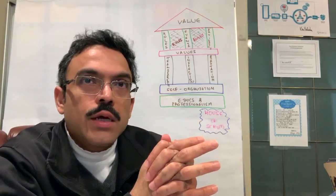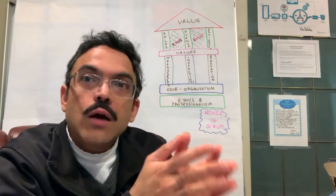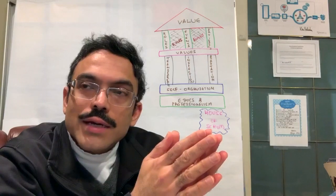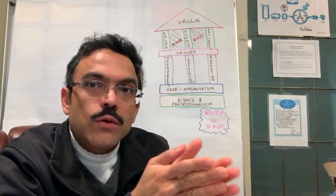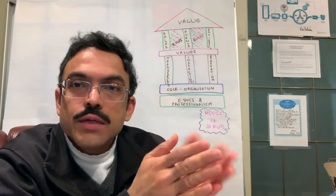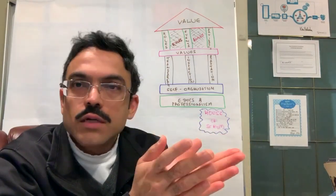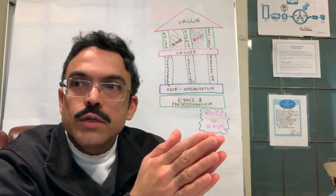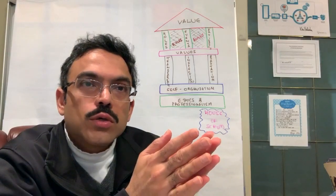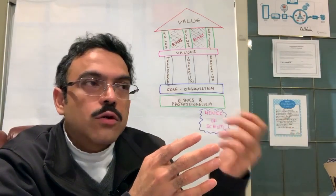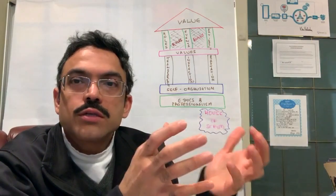He was in management and one of the concerns he raised was: Scrum is about self-organization, but where is the accountability? The fear was that many people, myself included, may have noticed that developers or development team members sometimes don't hold each other accountable. Maybe sometimes they don't hold themselves accountable, and I think this applies not only to developers but to human beings in general. So the unspoken concern was: if you take out the management-driven accountability and leave it to the Scrum team to hold each other accountable, how might that work?